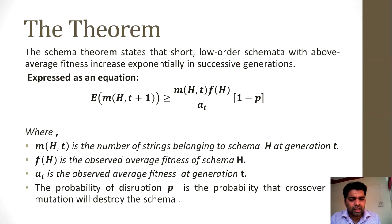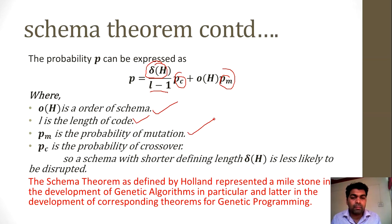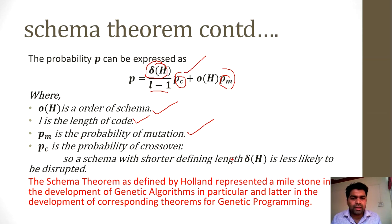Now let's see how we define the probability P. John Holland gave the following expression: P can be expressed as delta(H) divided by (L minus 1) multiplied by PC, plus o(H) multiplied by PM. Where o(H) is the order of schema, L is the length of code, PM is the probability of mutation — a very important factor — where probability 100% means the chromosome has changed and probability 0 means no change. PC is the probability of crossover. Schema with shorter defining length is less likely to be disrupted.